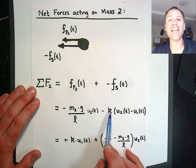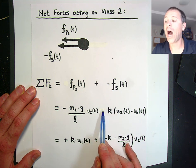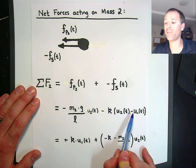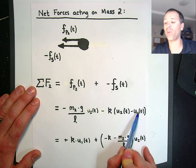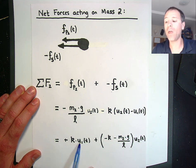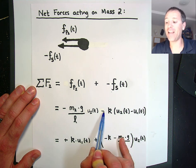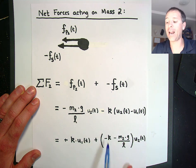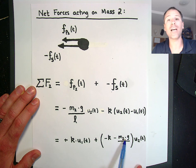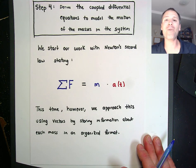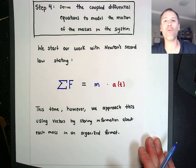We could distribute the negative k: negative k to u2, and negative k to negative u1, giving a positive. So we have positive k times u1, plus negative k times u2 from that term, which we factor out. We're left with negative k minus m2 times g divided by l, quantity multiplied by u2. Anytime we have an expression that allows us to calculate net force, Newton's second law appears.